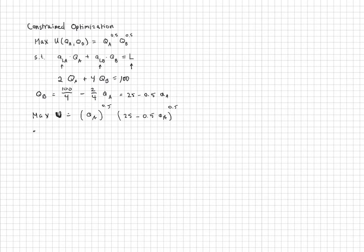And now I have utility as a function of only one variable, A. So I'm going to take the derivative of U with respect to QA and set that equal to 0. The derivative here is the derivative of the first term multiplied by the second term.